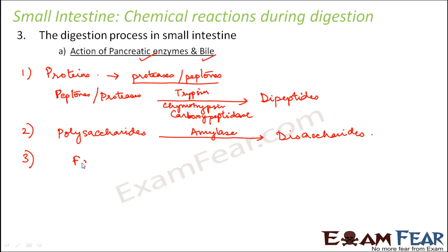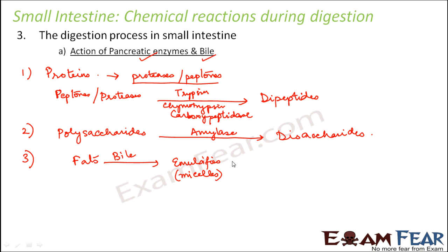Then come the fats. Fats have big globular structures, so somebody needs to break those big globular structures before their digestion can actually take place. The emulsification of fat is done by bile, which converts fats into smaller structures known as micelles. These smaller structures of fats are then acted upon by enzymes called lipases, and diglycerides are formed.